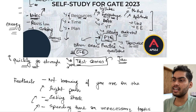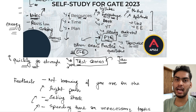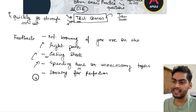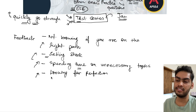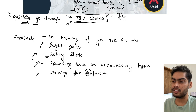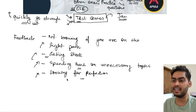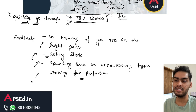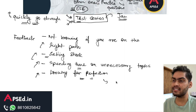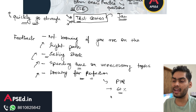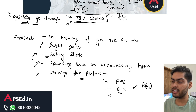Third is spending time on unnecessary topics — the solution is to first understand the weightage of different topics and give time accordingly. Fourth is looking for perfection: studying something for the first time and expecting to understand everything perfectly generally does not happen. Your understanding comes by repetition and takes time. If you can solve about 60% of previous year questions on a topic, you can move on and improve in the next revision cycle.